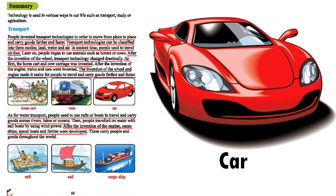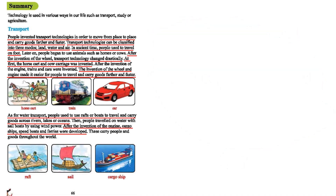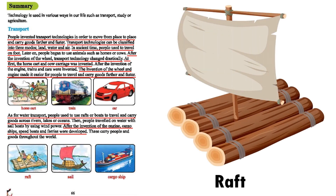For water transport, people used to use rafts or boats to travel and carry goods across rivers, lakes, or oceans. Then people traveled on water with sailboats by using wind power. After the invention of the engine, cargo ships, speed boats, and ferries were developed, carrying people and goods throughout the world.